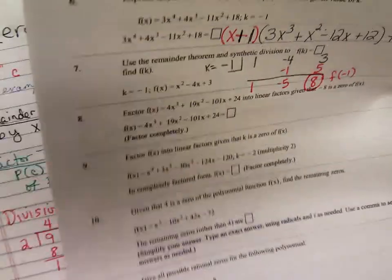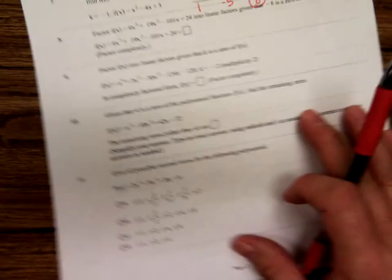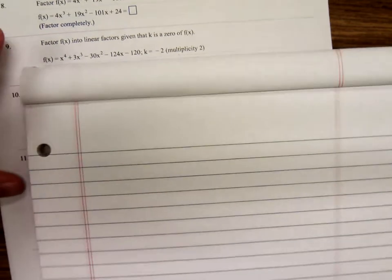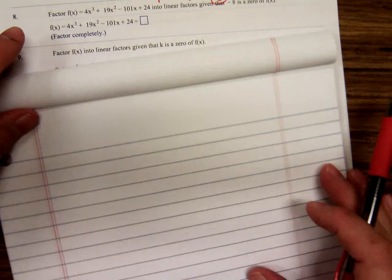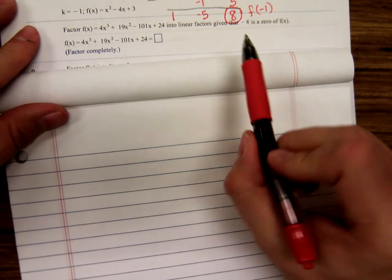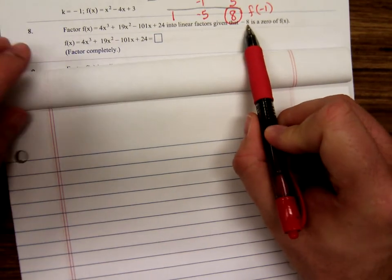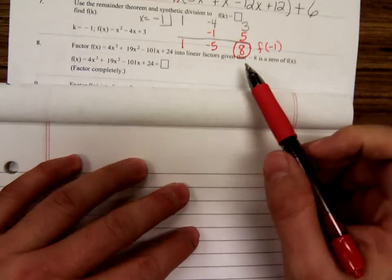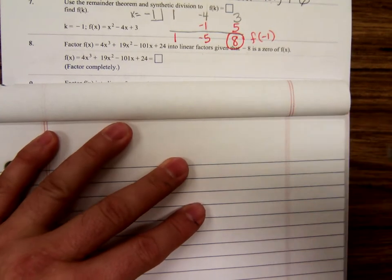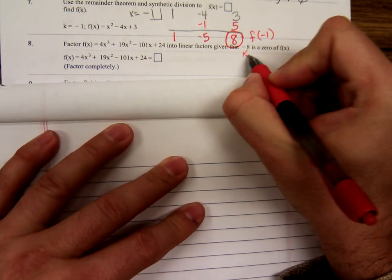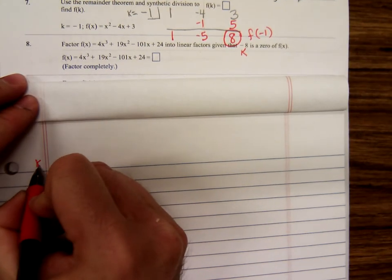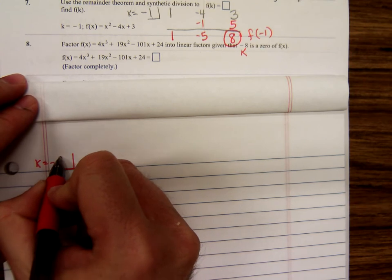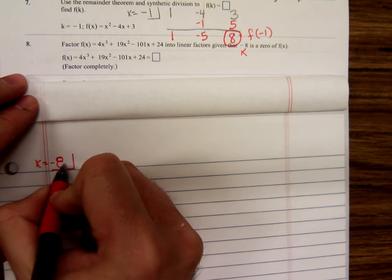Now, number eight, we're actually going to factor a third degree polynomial. It says factor this polynomial given that negative eight is a zero. So that's your number k. And the way we're going to do this is we set up our synthetic division.